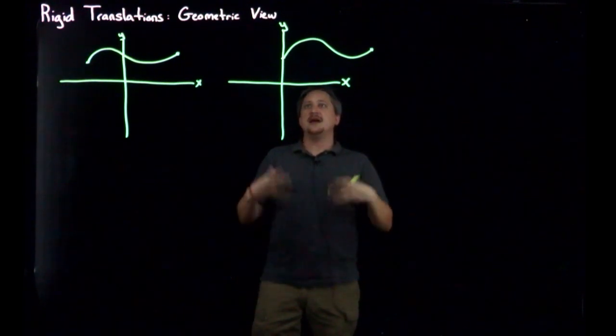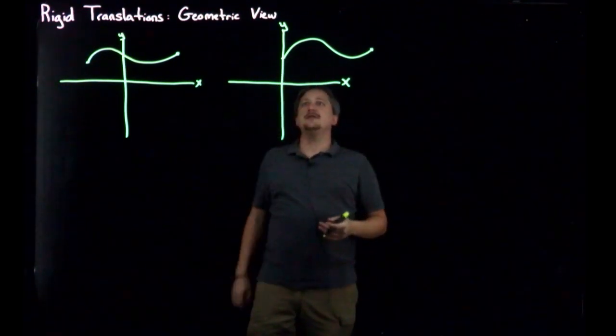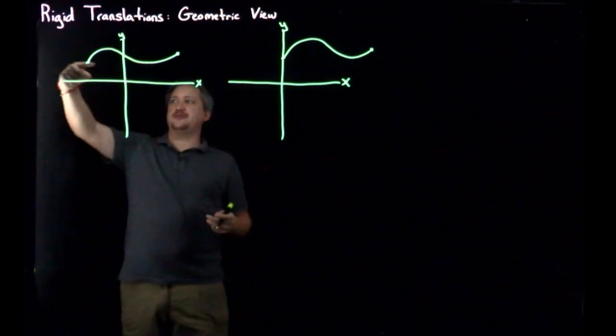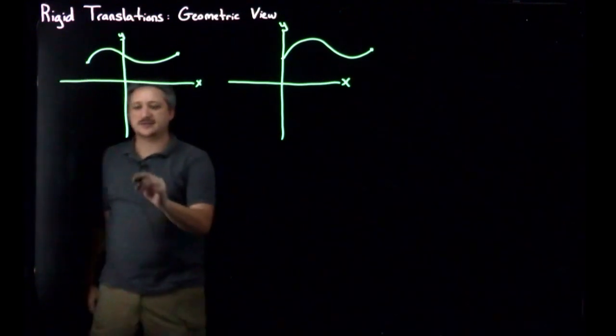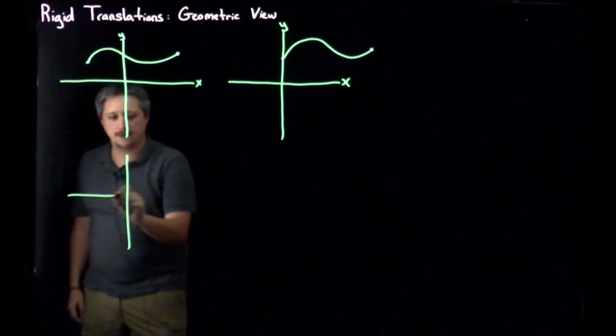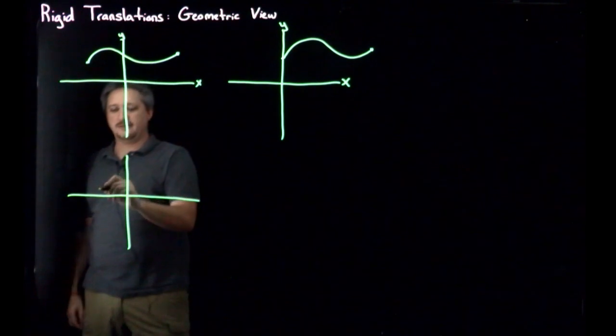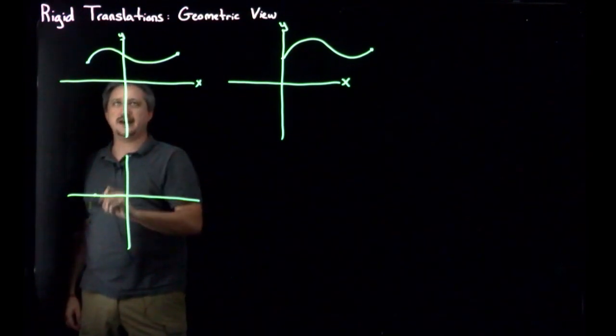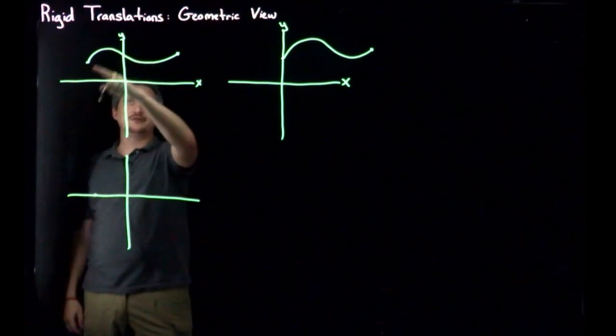Likewise, I could also move it up and down. So instead of sort of starting up here, I can maybe start on the axis. So instead of there, I would start sort of below that, but again, if I'm a perfect artist here, it'll be the same curve, so it'll go up and then down and out.